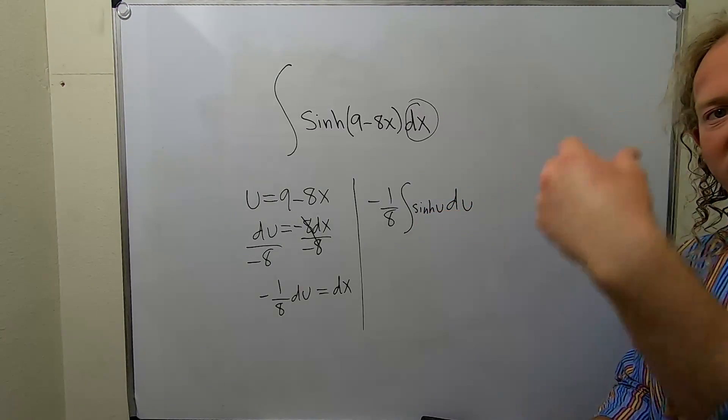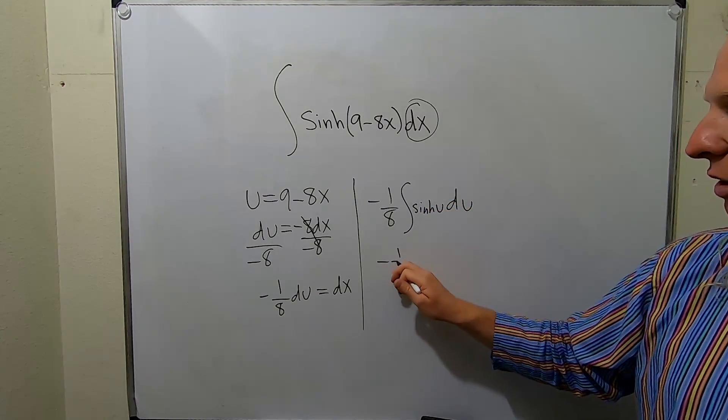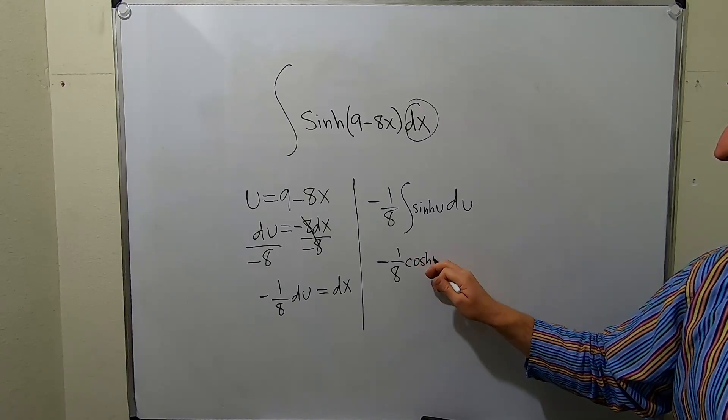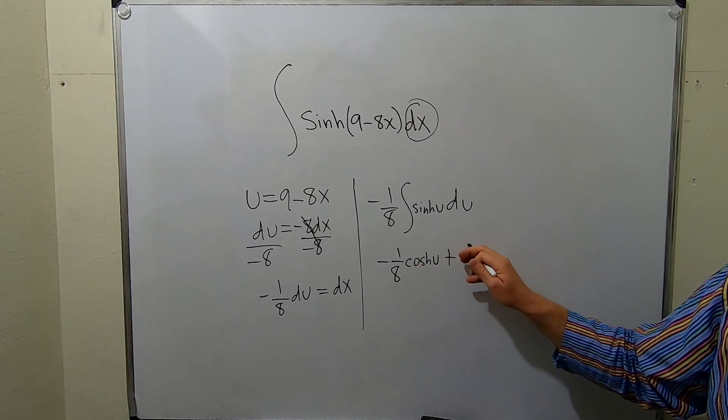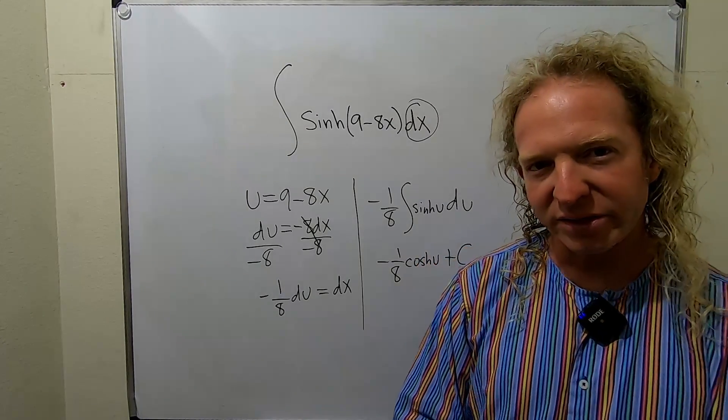When we integrate sinh, we get cosh. So this is negative 1/8 cosh of u. And let's not forget that plus C, which is our constant of integration.